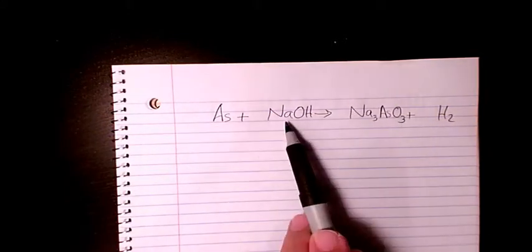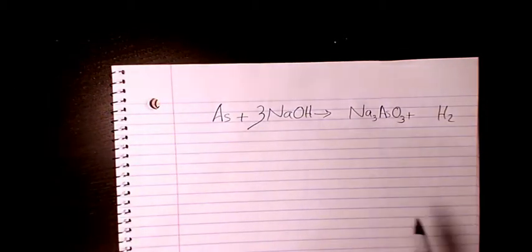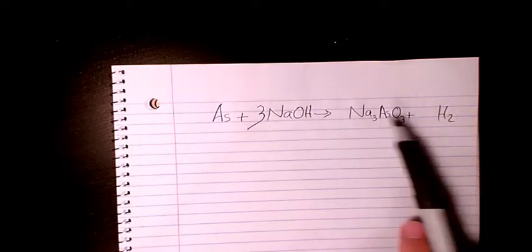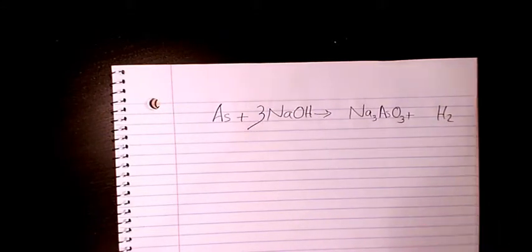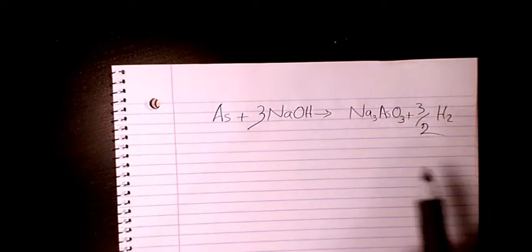Sodium: one here, three here, so I need to put three here. So now it's balanced. Hydrogen: we have three of them here and two here, so it has to be three over two. What about